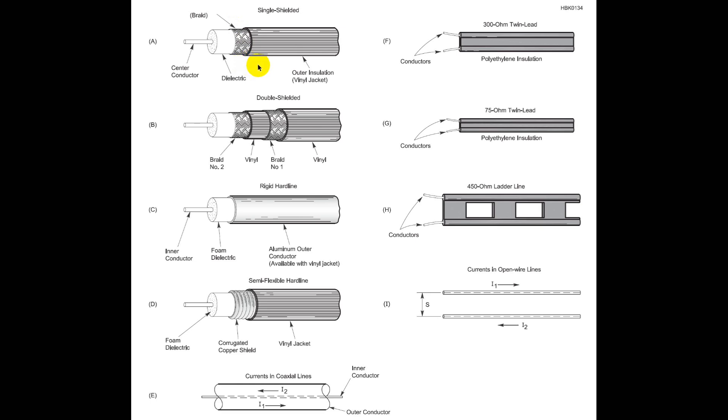Now the outer insulation keeps water out of this. One of the problems with the hole in the insulation is that this braid tends to suck up water along the entire length of the coax causing it to eventually not work.